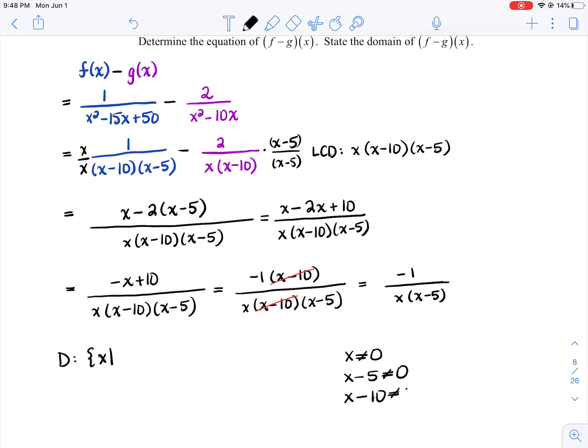I know the x minus 10s were canceled out. It doesn't matter. If at one time it was in the denominator's position, it acts as an NPV or a non-permissible value, and those automatically affect your domain. So domain is x cannot equal 0, it cannot equal 5, and it cannot equal 10.